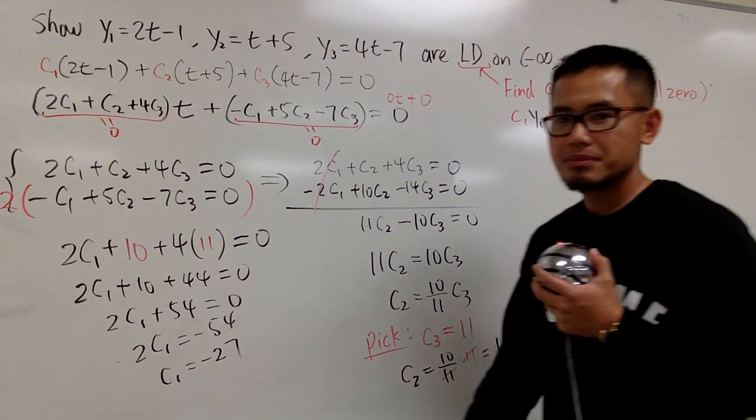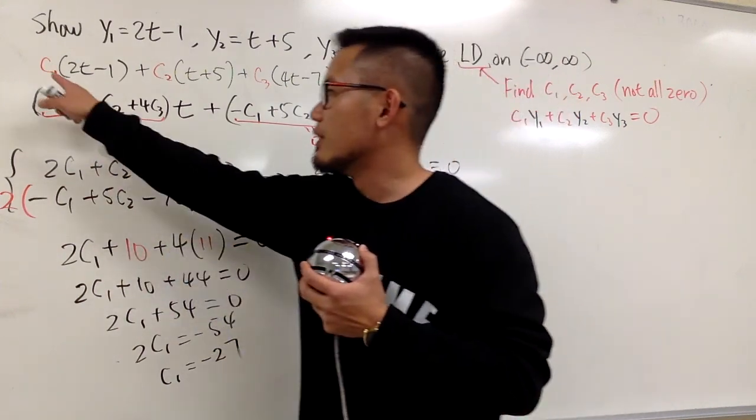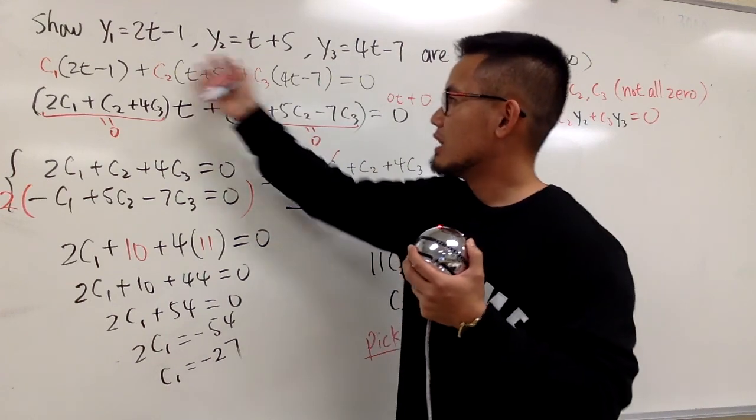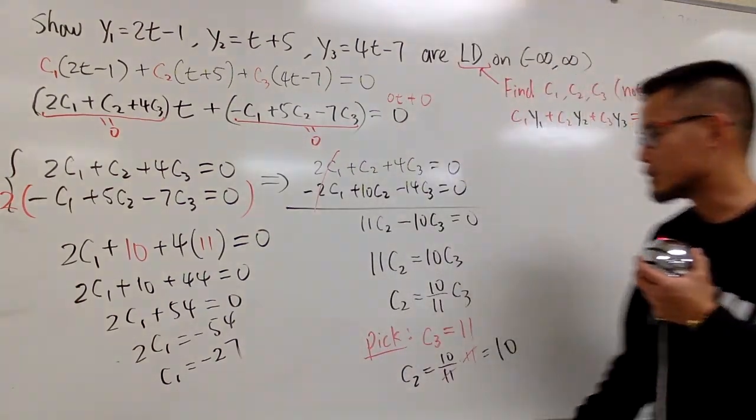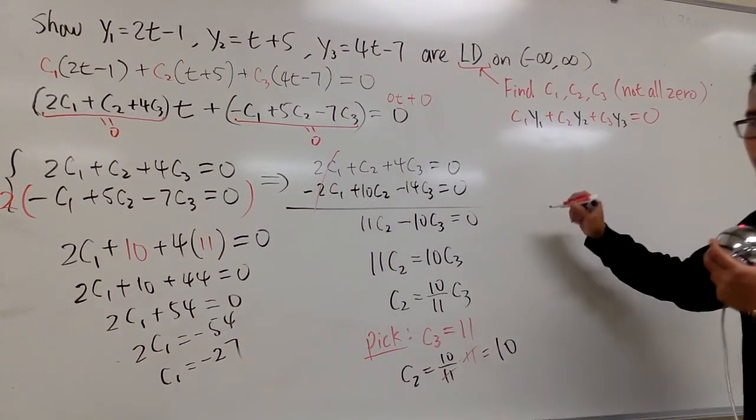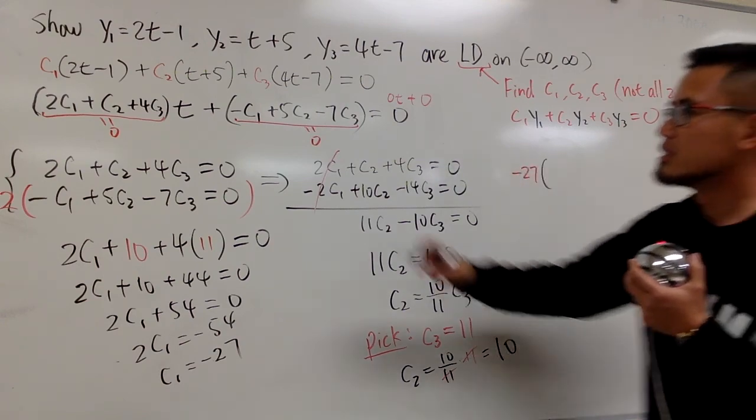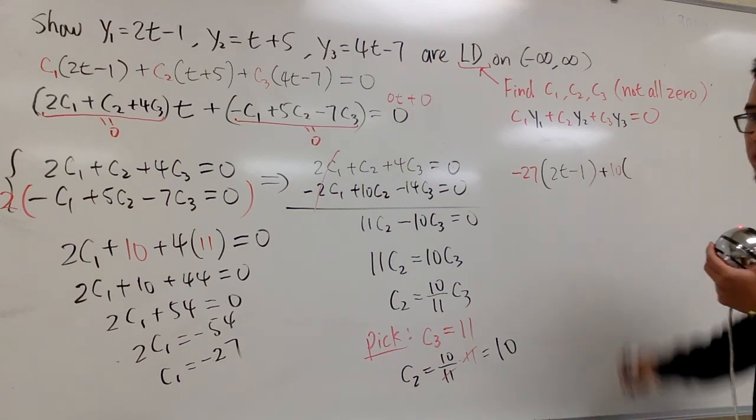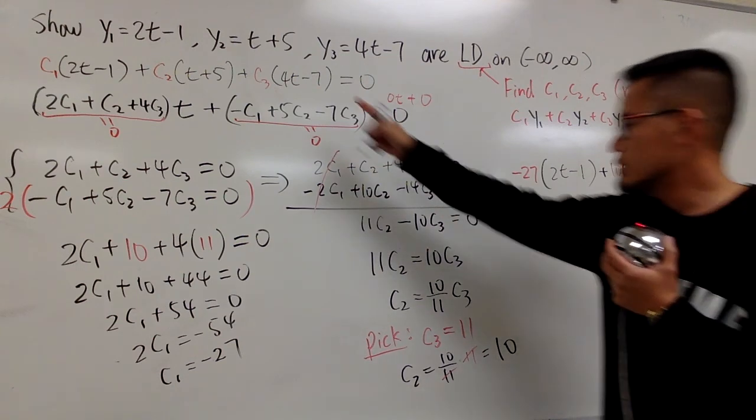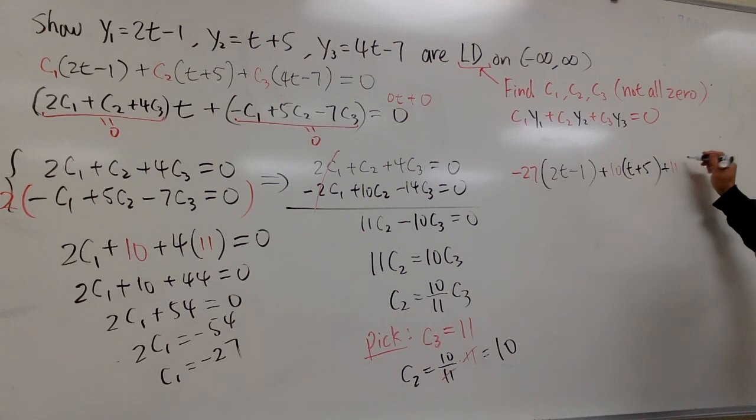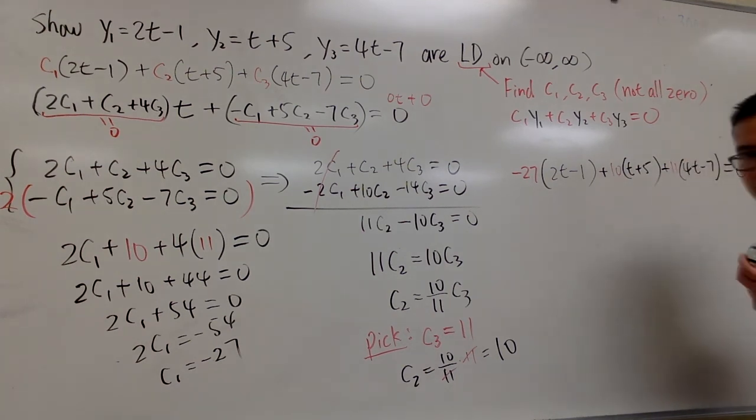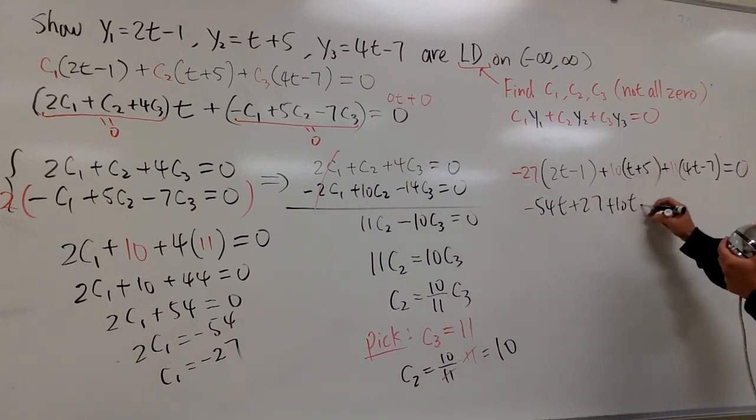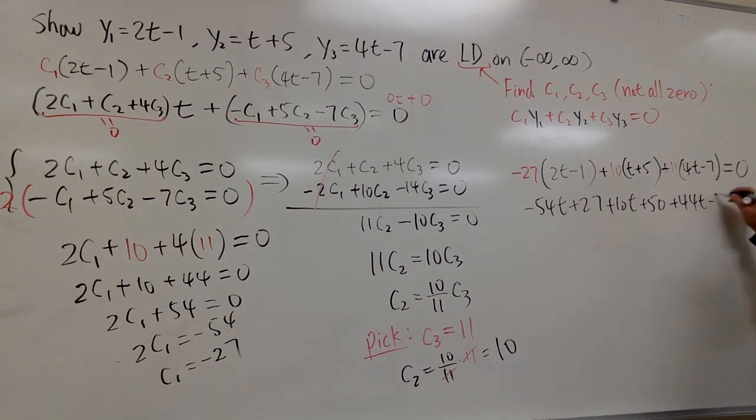So what I'm trying to show you is that when I pick c1 to be negative 27, and I will put down 10 for c2, and I will put down 11 for c3, guess what? The entire left-hand side will be just as 0 as the right-hand side. So I will show you guys that real quick. Put this there, I'll do it here. Negative 27 times 2t minus 1, and then c2 is 10, so plus 10 times t plus 5, and then c3 is 11, plus 11 times 4t minus 7. I will show you this is equal to 0. So you see, distribute, you get negative 54t plus 27, this is plus 10t plus 50, and then plus 44t and minus 77.